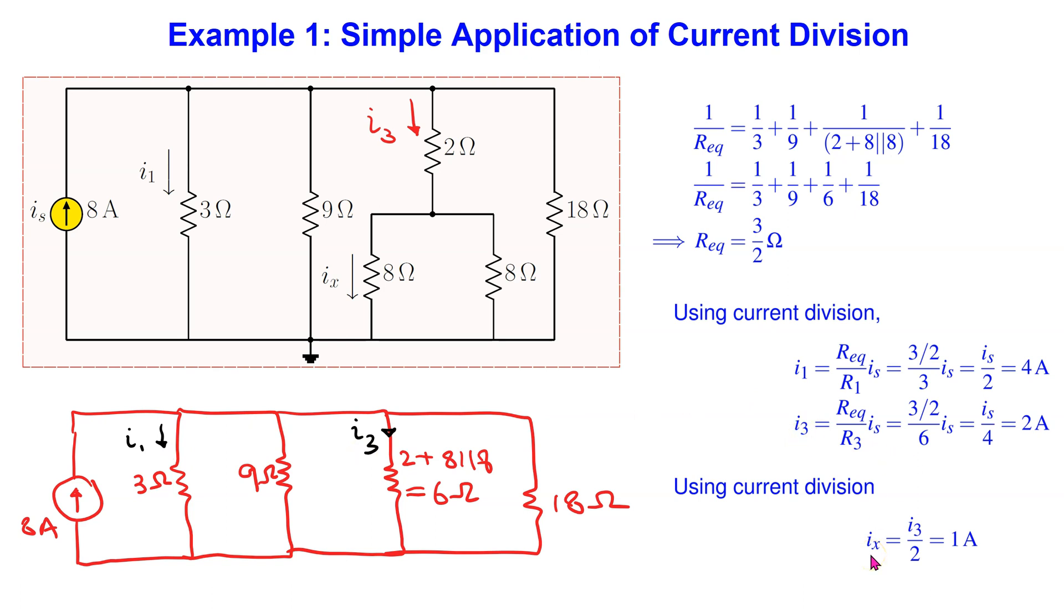To find Ix, we note that the two 8 ohm resistors are in parallel and form a current divider for the branch current I3. Since these two resistors are equal,